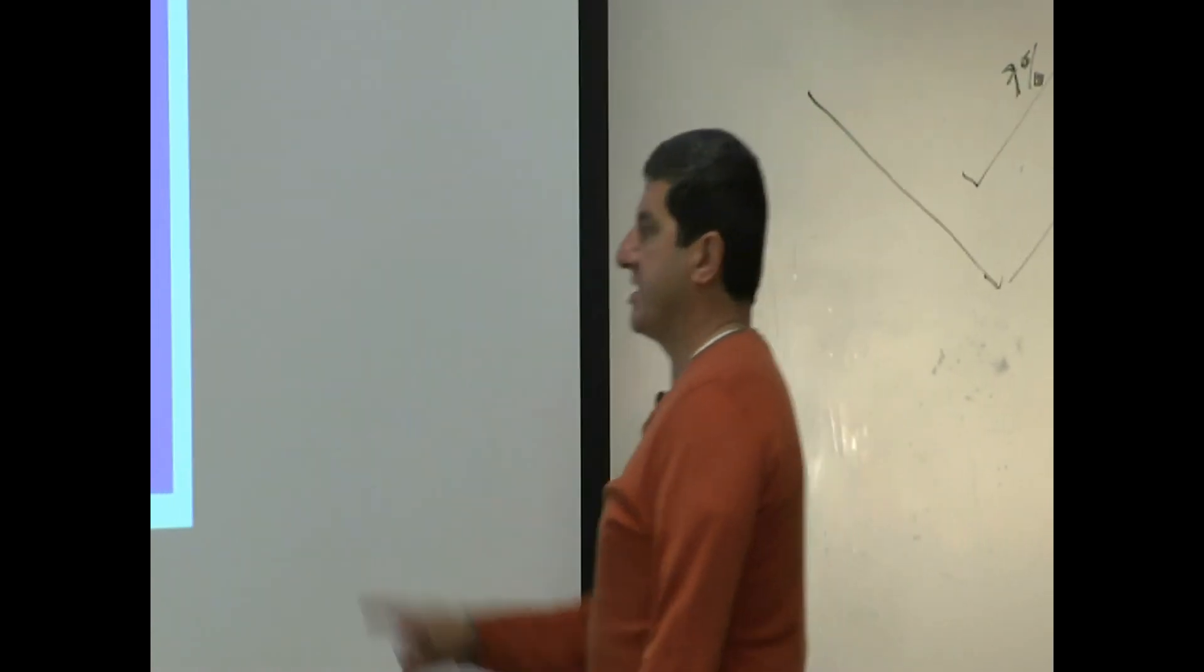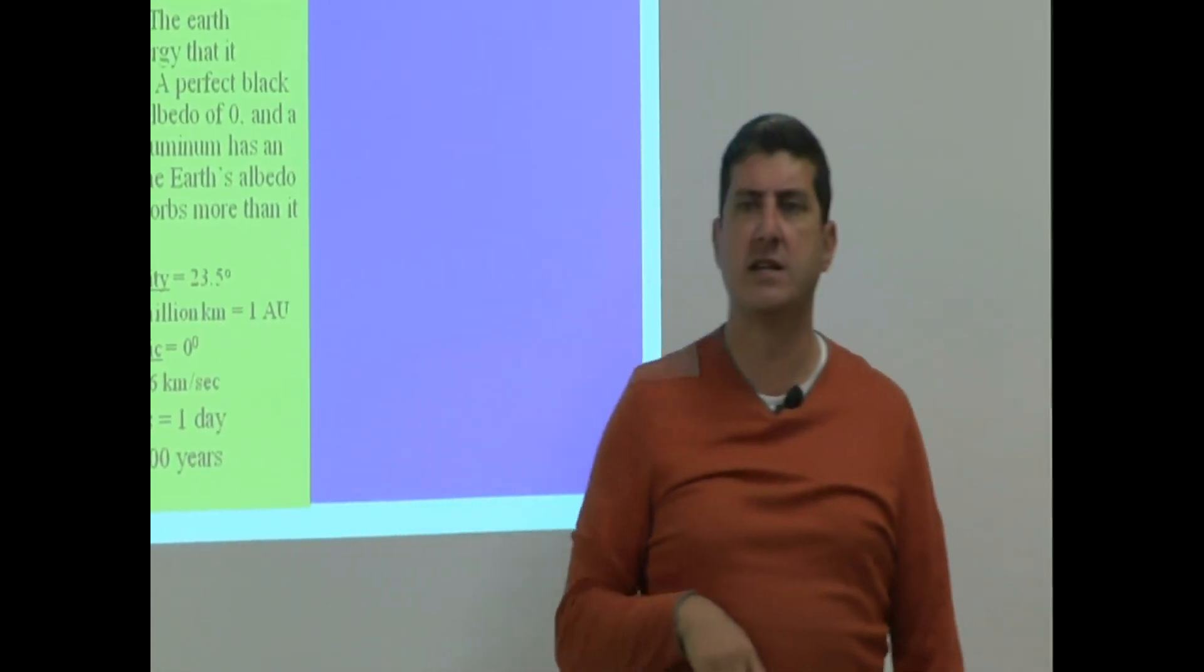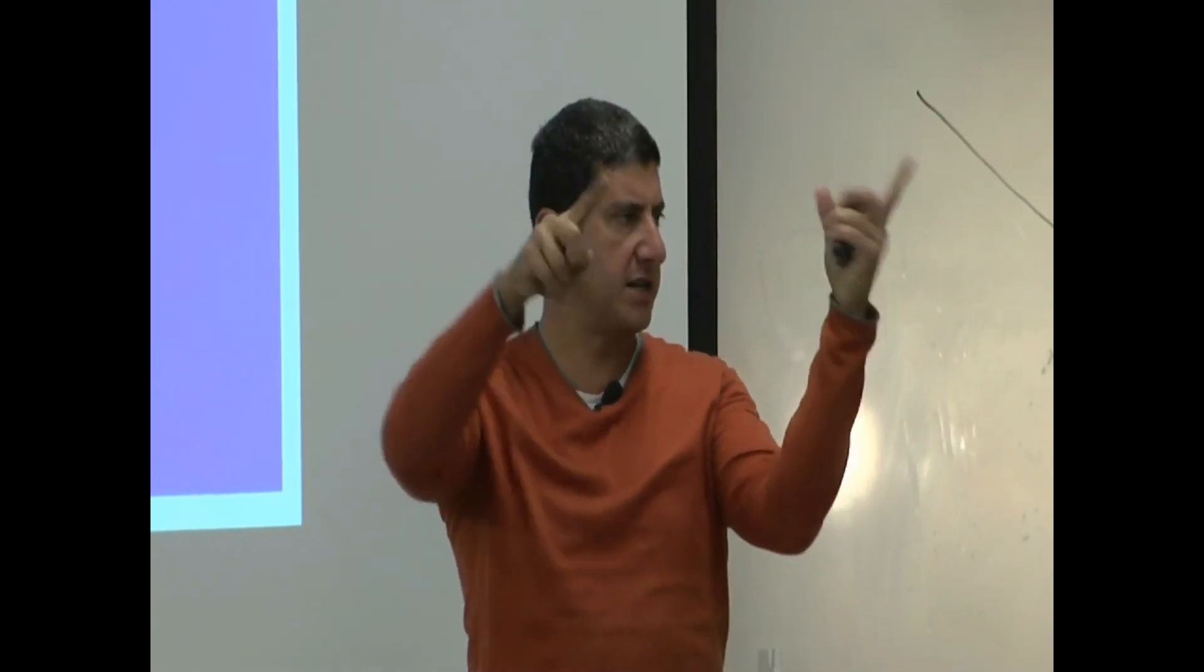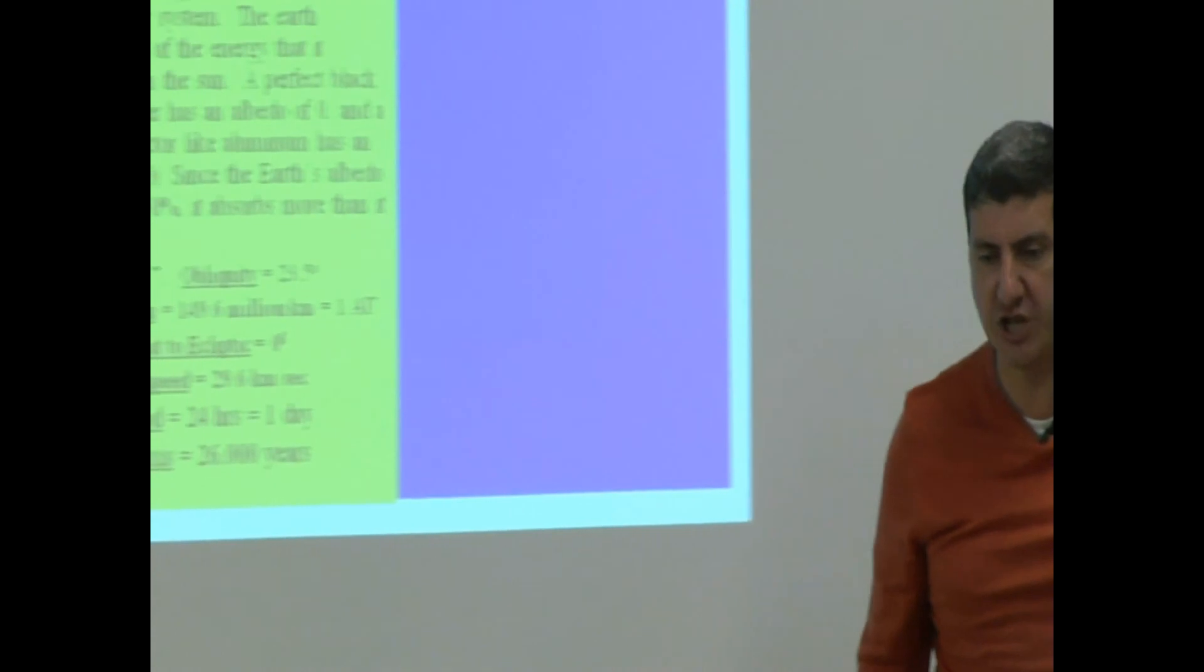Precession of axis, we talked about that way back when we were doing constellations. We said every 26,000 years, the earth's axis spins around like this and it precesses. Okay, with that, we're kind of done with the general data.